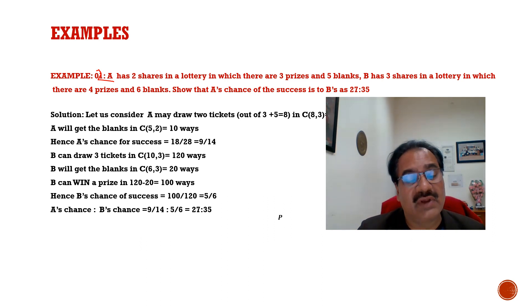B can draw three tickets in how many ways? 10C3, that means 120 ways. Then B will get the blanks in 6C3 ways, means 20 ways. B can win a prize in 120 minus 20, which means 100 number of ways. Yes, B's chance of success is 100 by 120, that is 5 by 6. And A's chance to B's chance is 9 by 14 to 5 by 6, that is 27 to 35. In this way, you have calculated how we can solve such problems.